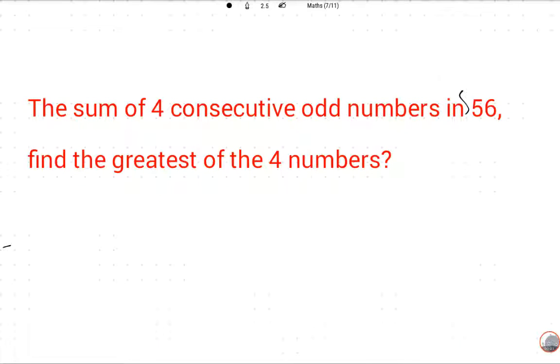First of all, please subscribe this channel. The sum of four consecutive odd numbers is 56. Find the greatest of the four numbers.